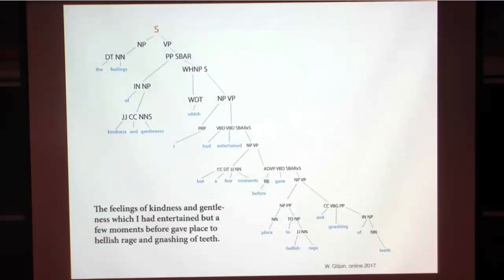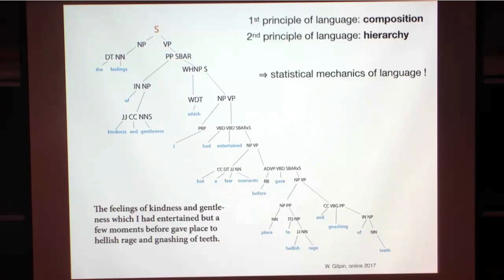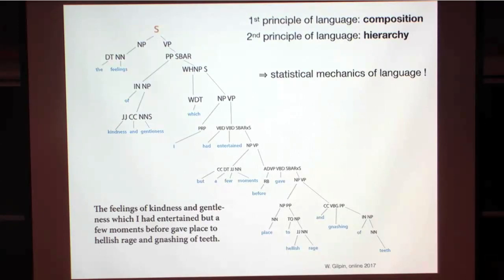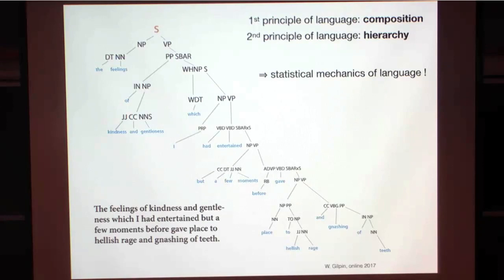Here's a long Victorian sentence from Frankenstein: 'The feelings of kindness and gentleness which I'd entertained but a few moments before gave place to hellish rage and gnashing of teeth.' The tree can be quite rich. We see that in language, hierarchy is very important and composition is always important — we build statements from more elementary words, and words from more elementary sounds. These two facts, together with the fact that context-free languages are a natural ensemble for real languages, suggest that one should construct a statistical mechanics of language. I was surprised that nobody else had seemed to have done this before, even though it could have been done anytime in the past 60 years.